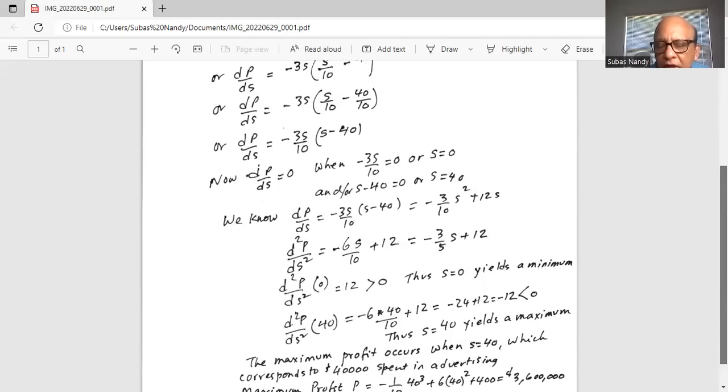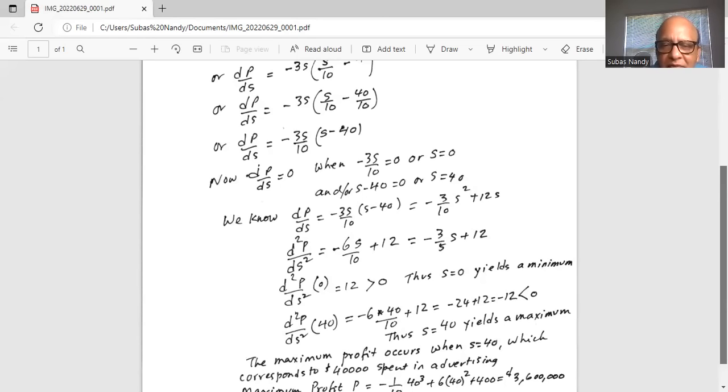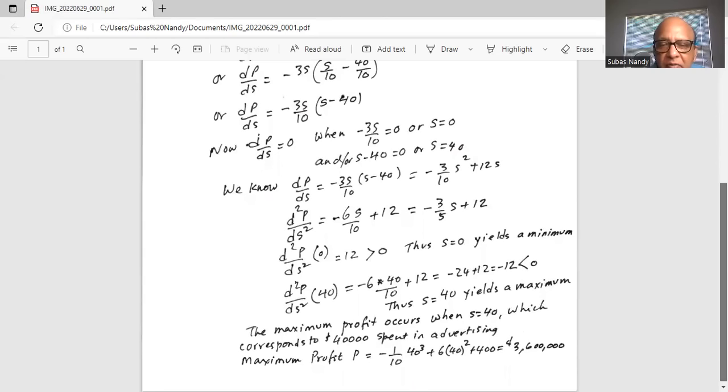This comes directly out of the rule of derivatives. So when the second derivative is greater than 0, the s value equal to 0 is a minimum, and when the second derivative is negative, the s value of 40 is a maximum for the profit.